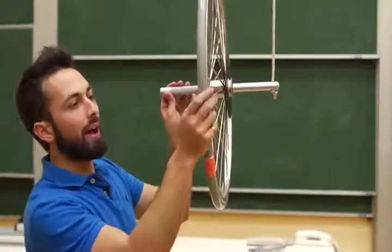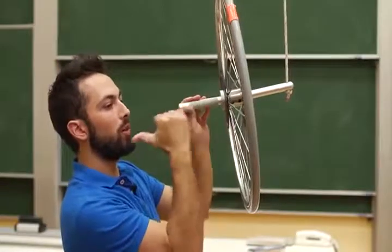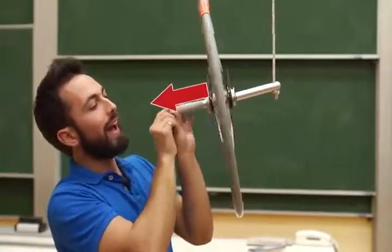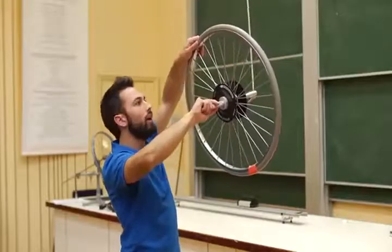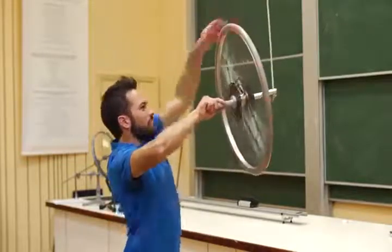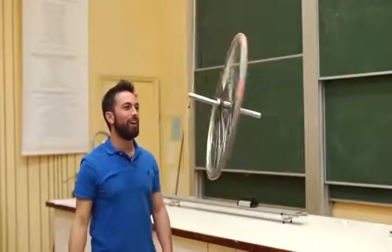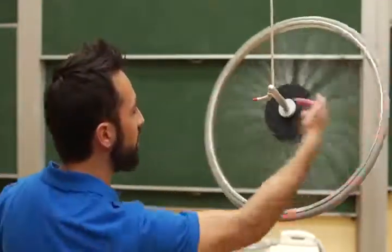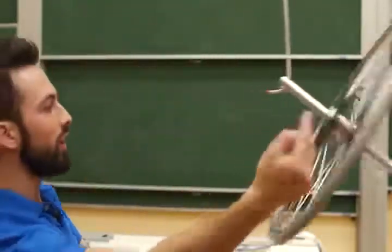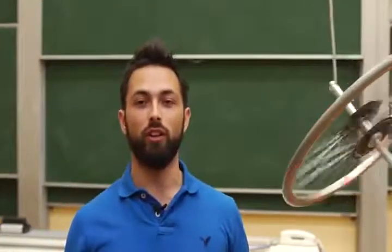But what happens if I only let go after I've already spun up the bicycle wheel? Well, in that case, the bicycle wheel would already have angular momentum this way. And so a torque pushing that way actually swings this angular momentum around that way. Look at that — it's rotating as we predicted. The angular momentum vector is pointing out this way, but torque is pushing it this way, and torque is pushing that angular momentum vector around. Except not for long, because this appears to be quite a friction-full wheel.